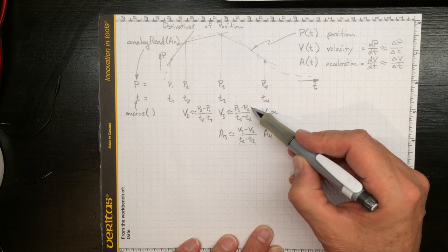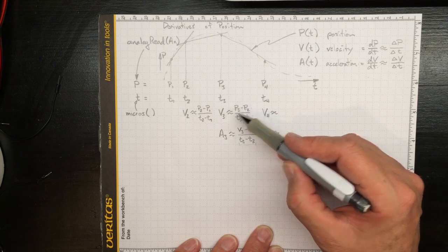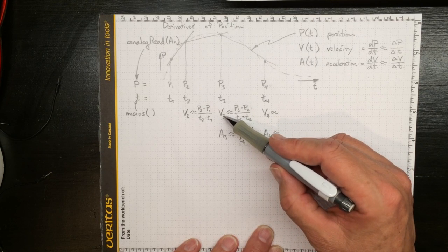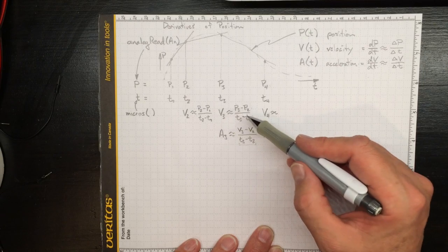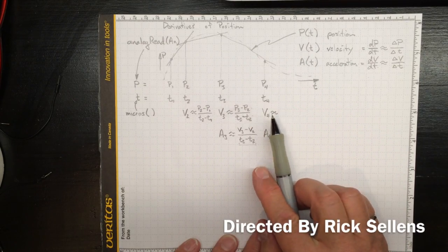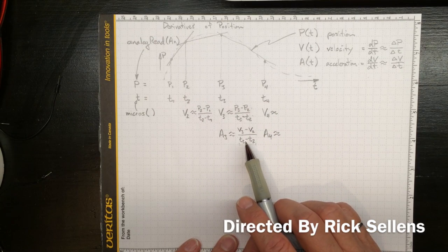Now, if we take this one, substantially in error, and that one, substantially in error, and divide them by each other, we'll get a velocity estimate that will be really in error. And that could be a problem. So we're going to have to be careful not to push them too close together in time. And we'll test out that idea by writing some code on the Arduino.